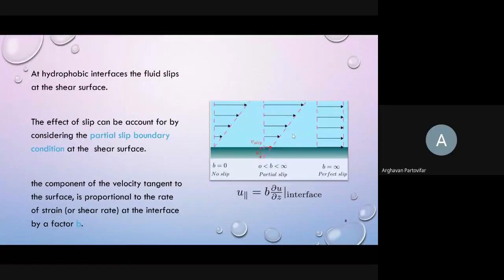At hydrophobic interfaces, the fluid velocity is not assumed to vanish at shear surface. This arises from lower friction force that hydrophobic surfaces exert on fluid. This makes slip boundary conditions an appropriate choice for fluid velocity at the shear plane. The slip boundary condition is identified with the slip length, which is defined as where the linearly extrapolated tangential velocity profile of the fluid vanishes relative to the interface.